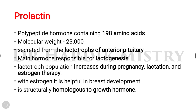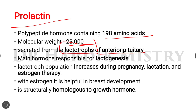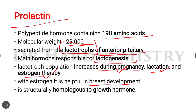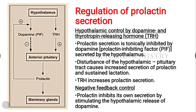The second hormone from the anterior pituitary gland is prolactin. It is a polypeptide hormone containing 198 amino acids, molecular weight around 23,000. It is secreted from the lactotrophs of the anterior pituitary gland and is the main hormone responsible for lactogenesis from the mammary gland. Lactotroph population increases during pregnancy, lactation, and estrogen therapy. With estrogen, it is helpful in breast development, and it is structurally homologous to growth hormone.